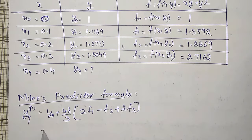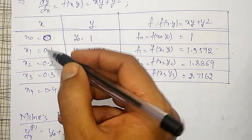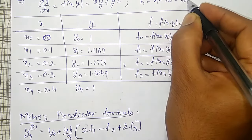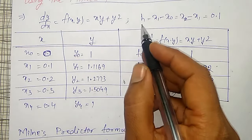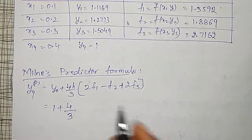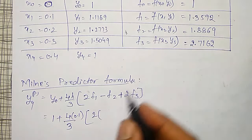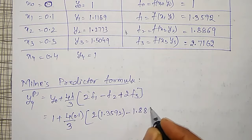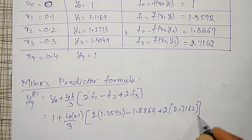In this I will substitute the values. What is my y0 value? y0 value is 1, plus 4h by 3. h value is the difference between x values, that is h equal to x1 minus x0, or x2 minus x1, which is equal to 0.1. Then 2f1: 2 into f1 value is 1.3592, minus f2: 1.8869, plus 2 times f3: 2.7162. Use this in the calculator.